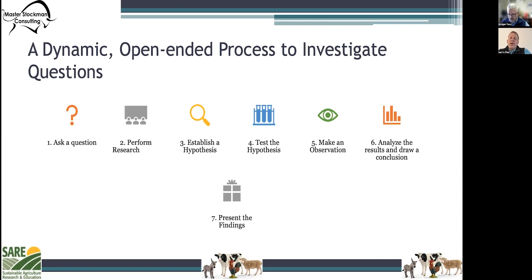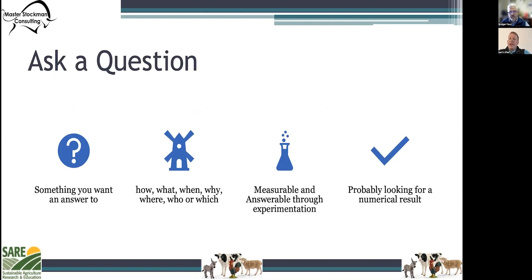The goal here is to discover cause and effect relationships by asking questions, carefully gathering and examining the evidence, and seeing if all the available information can be combined into a logical answer. The scientific method starts when we ask a question about something that we observe.